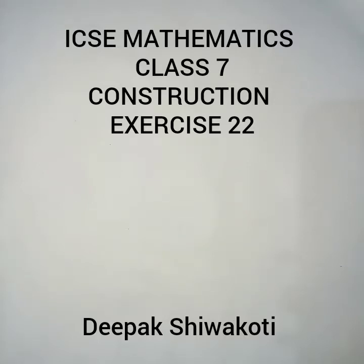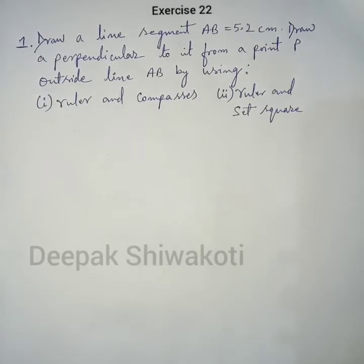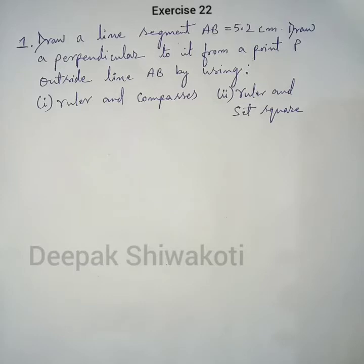Welcome to Class 7 Mathematics. Today we are going to start the Construction chapter, Exercise 2.2. Question number one: draw a line segment AB equals 5.2 centimeters, draw a perpendicular to it from a point P outside line AB, using (1) ruler and compasses, and (2) ruler and set square.